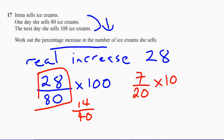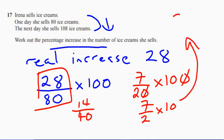Multiply that by 100. That looks much easier. Now, let's just do that. So 7 over 2 multiplied by 10. Wait a minute, 7 over 2 is 3.5 times 10. That's 35%.